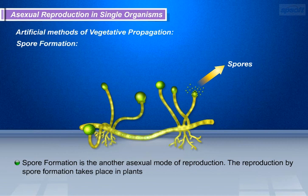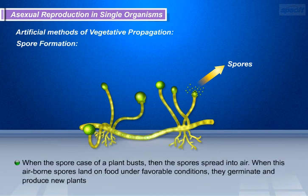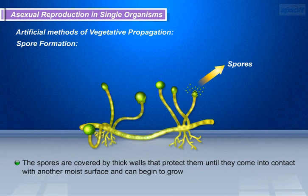Let us see the process of spore formation. Spore formation is another asexual mode of reproduction that takes place in plants. The parent plant produces hundreds of microscopic reproductive units called spores. When the spore case of a plant bursts, the spores spread into the air. When these airborne spores land on food or surfaces under favorable conditions, they germinate and produce new plants. The spores are covered by thick walls that protect them until they come into contact with a moist surface and can begin to grow.